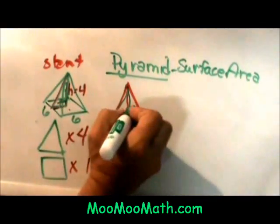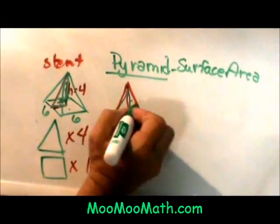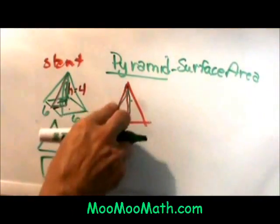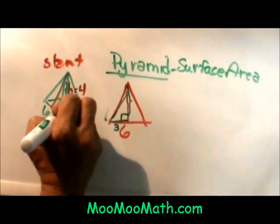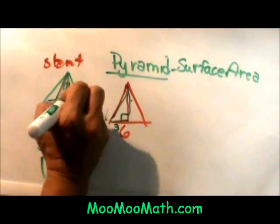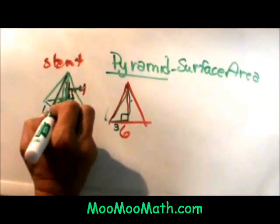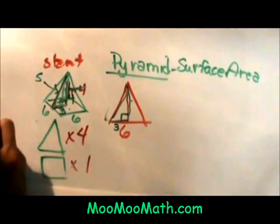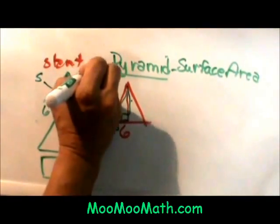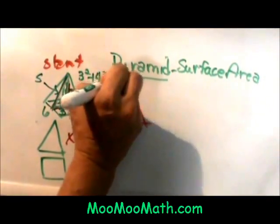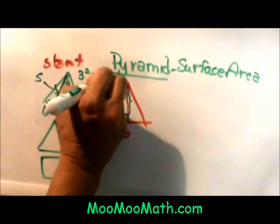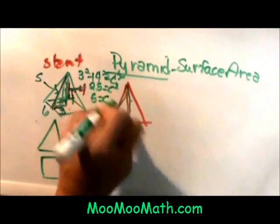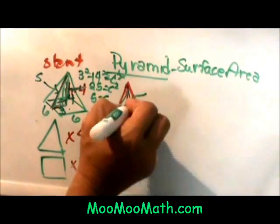My height inside is going to be four and I am going to use the Pythagorean theorem to find this slant height. To find that slant height I am going to use three squared plus four squared is equal to c squared. So 25 is equal to c squared and so c is five. So that means my slant height is actually five.